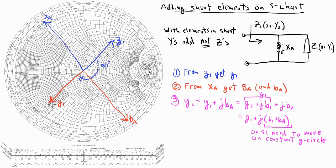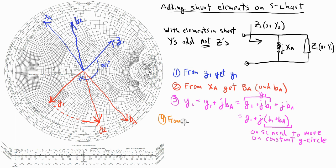Let's go ahead and do that on the Smith chart to see what that would look like. I'm staying on a constant G circle and changing my susceptance exactly by BA. Let's say that I end up at the input admittance point Y2. And so to go from Y2 on the Y chart to Z2 on the Z chart, I would just rotate the gamma vector by 180 degrees.